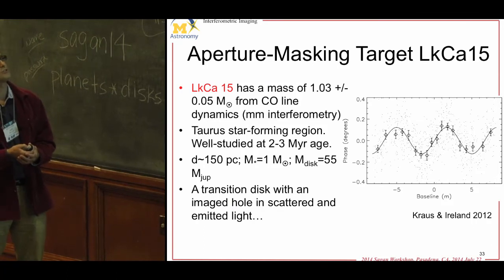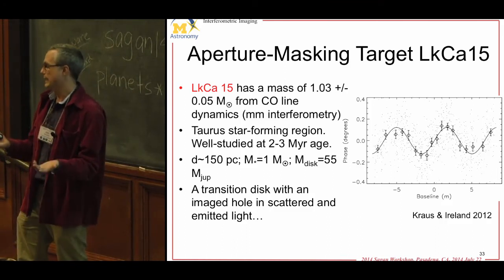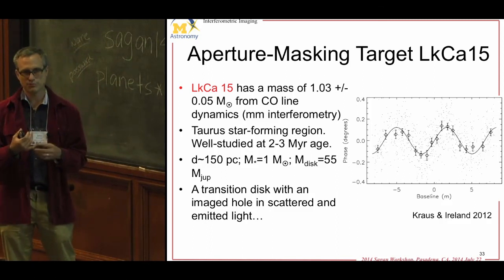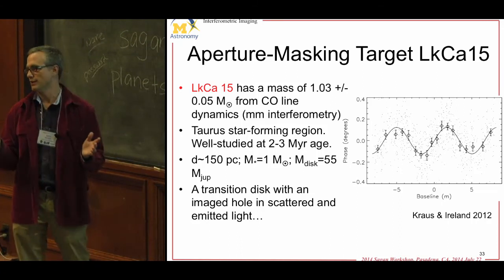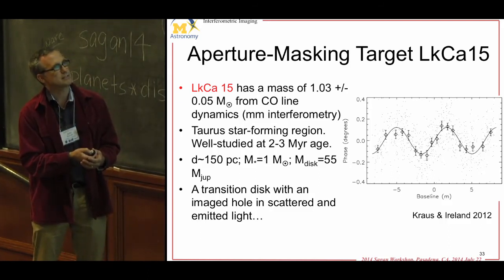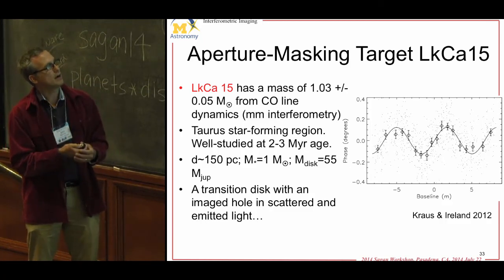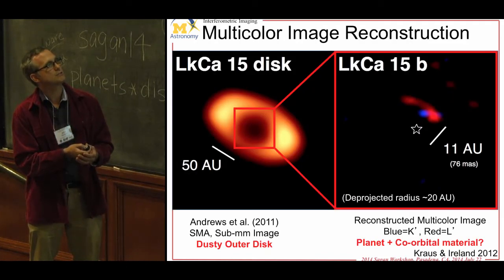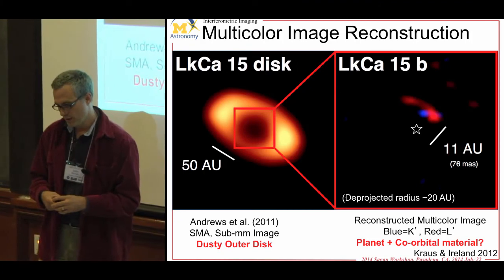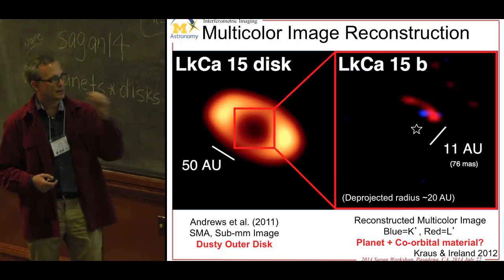The poster child for this technique is the LkCa 15 result, where they look in transition disks and sometimes find a companion. Aperture masking can find a 10-to-1 or 100-to-1 companion very easily — sometimes transition disks are due to a binary star rather than planet formation. Here's the signal: a closure phase oscillating, 0.1 degrees, corresponding to a few hundred to one flux ratio. Inside the transition disk seen in the millimeter, there appears an object in multiple bands that is extended along an azimuth in some bands. They've kept monitoring it — it's there, repeated over many years, with evidence it might be in orbit.